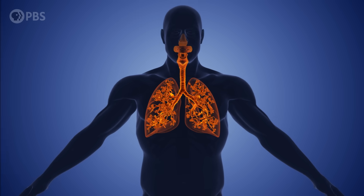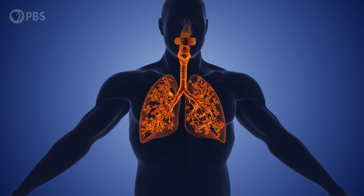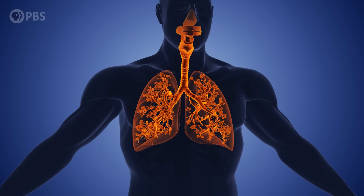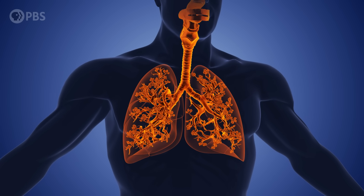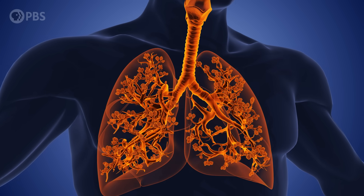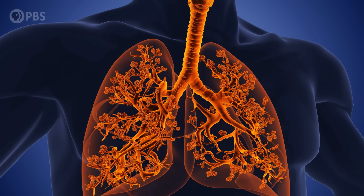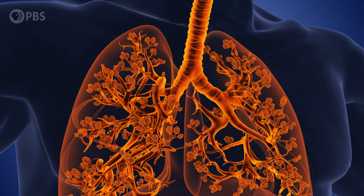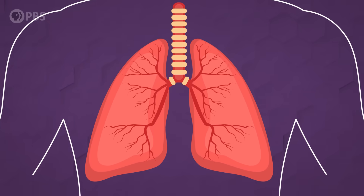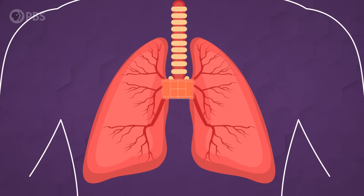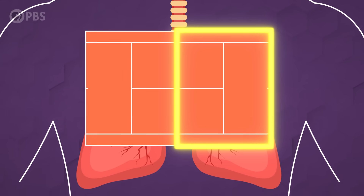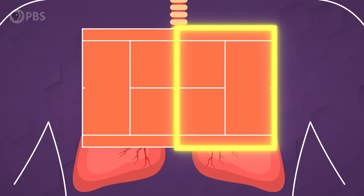Meanwhile, inside our bodies, we have our own little trees. A lung's job is to take in oxygen, and an adult body needs around 15 liters of O2 every hour. If our lungs were just two balloons, they'd never keep up. Fractal branching means our lungs can hold half the area of a tennis court while staying packed up nicely inside our chest.